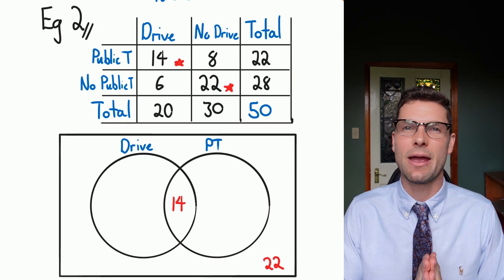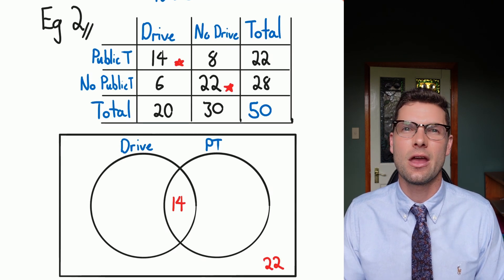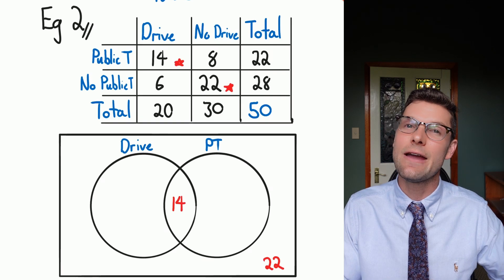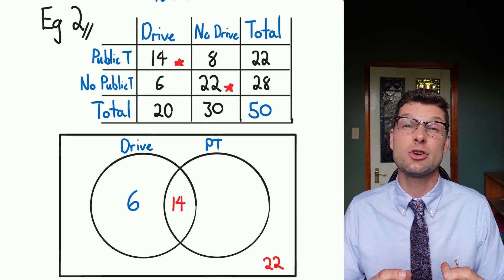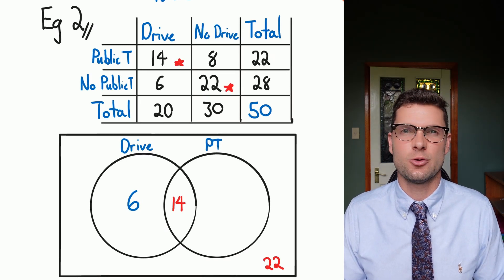So from here I want to look at how many people drive in total. I've got 20 down there in that column. But because 14 people do both, I've got to use the leftover of six straight into that circle. So again I'm still looking at the inside of my two-way table.